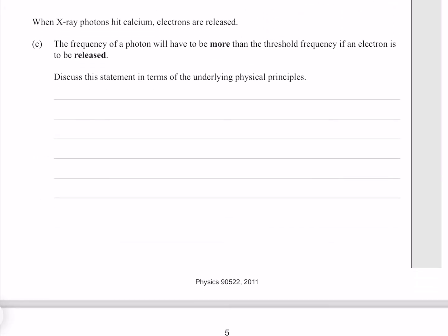When X-ray photons hit calcium, electrons are released. The frequency of a photon will have to be more than the threshold frequency if an electron is to be released. Discuss this statement in terms of the underlying physics principles.